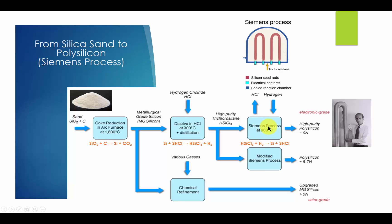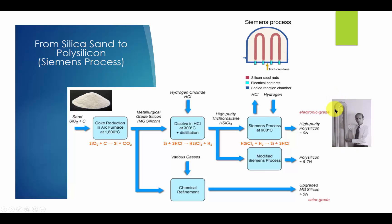Step 4: This high-purity trichlorosilane is vaporized in a hydrogen atmosphere at 1100 degrees C for 200 to 300 hours. Step 5: The reaction takes place inside large vacuum chambers, and silicon is deposited onto electrically heated thin polysilicon rods, which is a small grain-sized silicon, to produce high-purity polysilicon rods of diameter 150 to 200 mm.